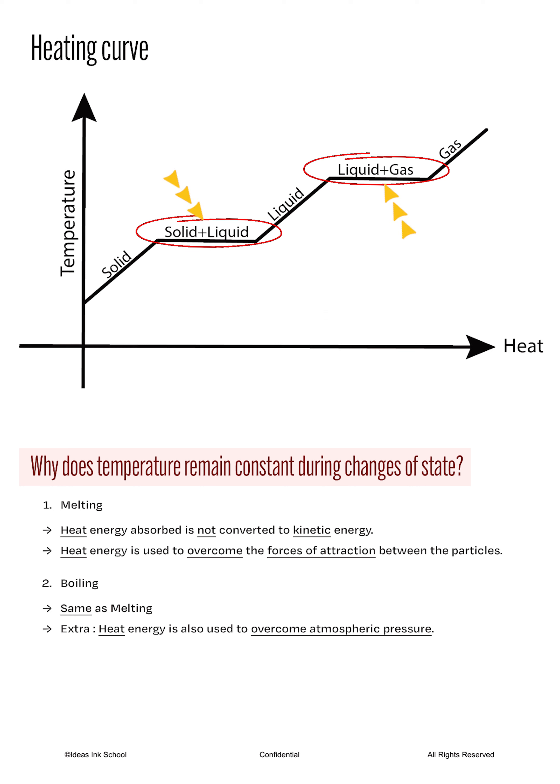This is because when a substance melts, the absorbed heat energy is not converted to kinetic energy. Instead, the heat energy is used to overcome the forces of attraction between the particles. Since the kinetic energy of a substance is directly proportional to its temperature, no changes in kinetic energy means that the temperature will remain constant.